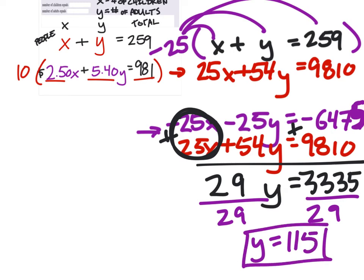And then plug it in up top. For people. So if we use this equation, x plus y equals 259. But we see that y is 115. So we're going to replace it in that equation. You could have used the other one as well.